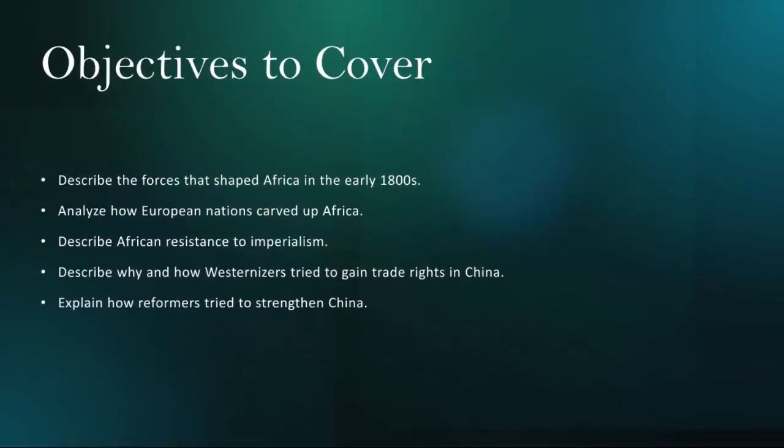We're going to begin in the early 1800s. Africa was undergoing significant changes. Internal factors like the rise of powerful states, such as the Sokoto Caliphate and the Zulu Kingdom, along with external factors like increased trade with Europe and the Arab world, contributed to this transformation. These forces reshaped political, social, and economic landscapes across the continent.